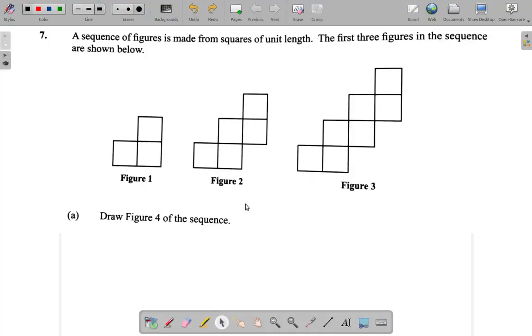Question 7a. A sequence of figures is made from squares of unit length. The first three figures in the sequence are shown below.